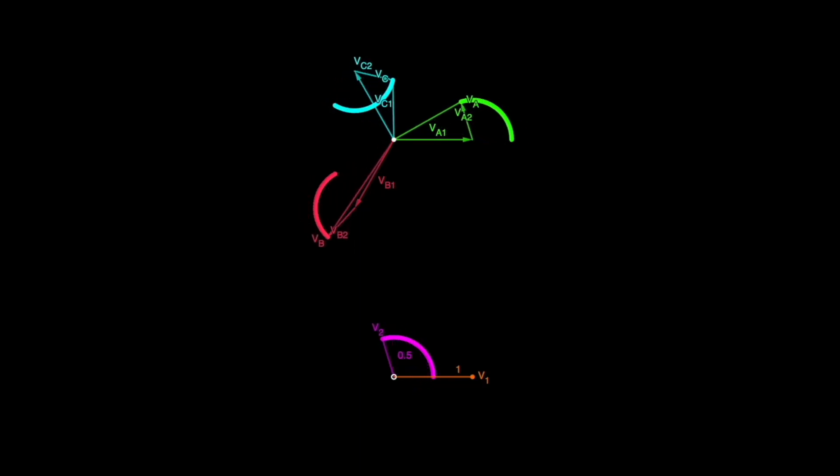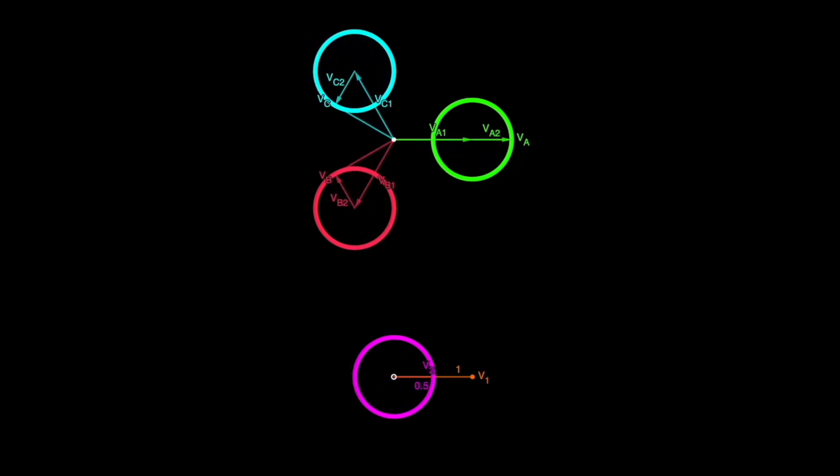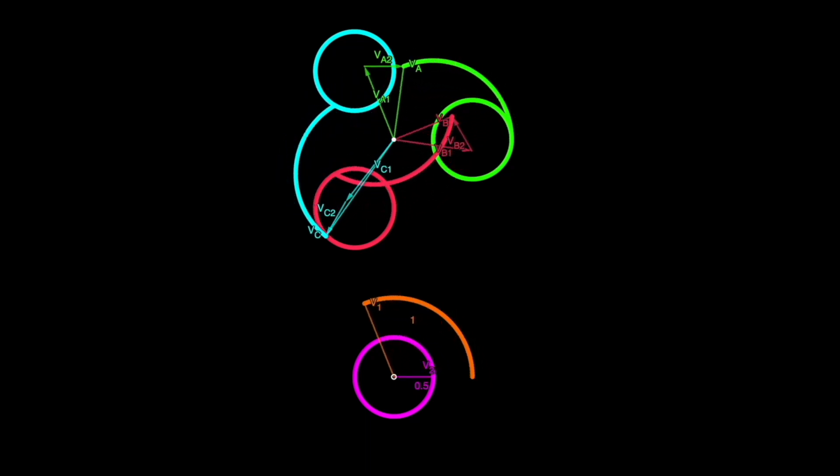Tracing the path of the phasors as I rotate the negative sequence 360 degrees creates three circles of the same size as the negative sequence circle, and likewise the same thing happens as I rotate the positive sequence phasor around.